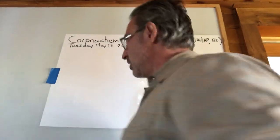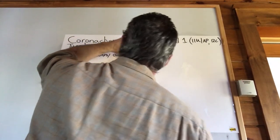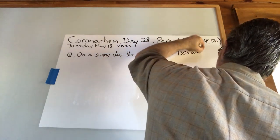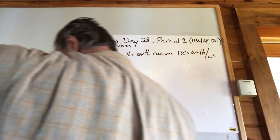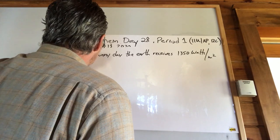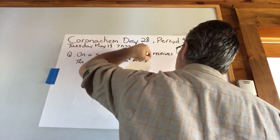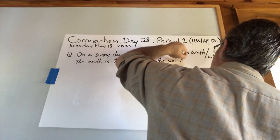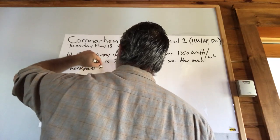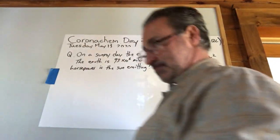We know from research that on a sunny day, obviously a cloudless day, the earth receives about 1,350 watts per square meter. On a sunny day with no clouds, you get 1,350 watts of energy hitting the surface of the earth per square meter. The earth is, on average, 93 million miles from the sun. How much horsepower is the sun emitting based on these data?